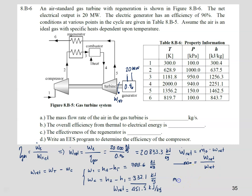Now we can get the mass flow rate. The mass flow rate will be the net power, 20,833.3 kilowatts, divided by the specific net work, 451.5 kilojoules per kilogram. That gives 46.14 kilograms per second. In the class problem we have 46.1 — essentially the same answer.